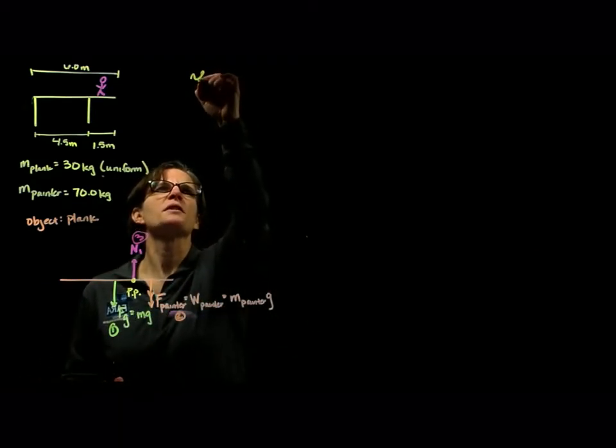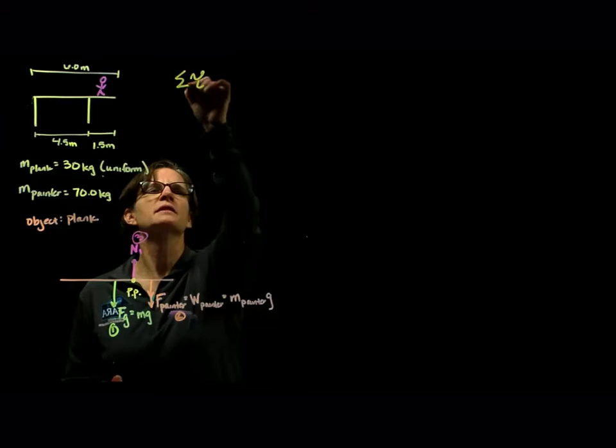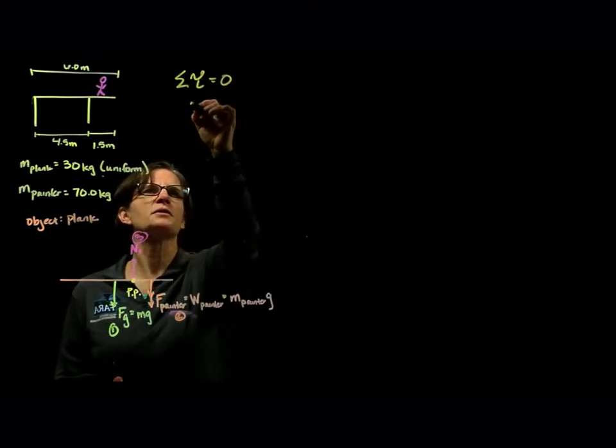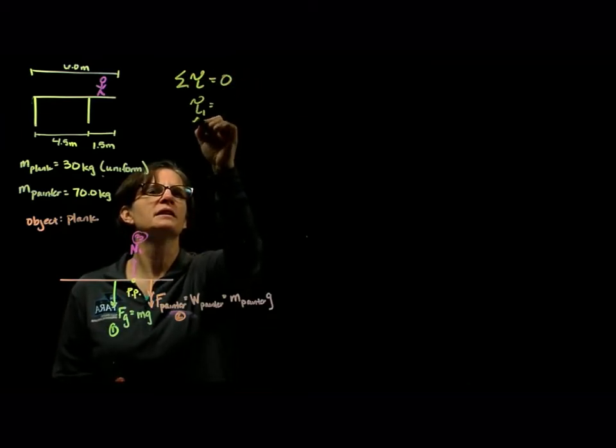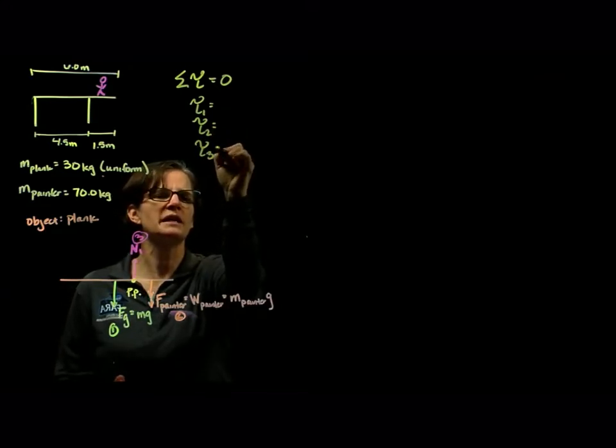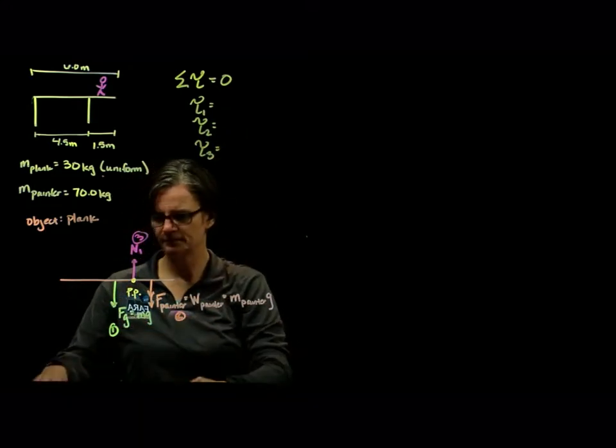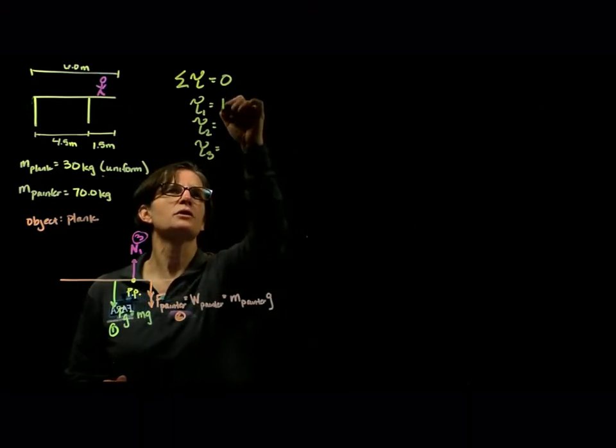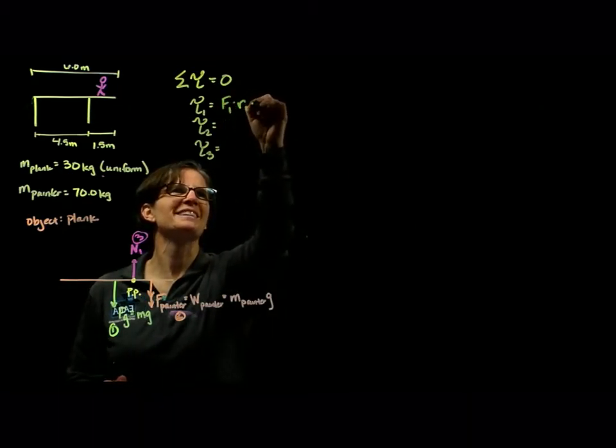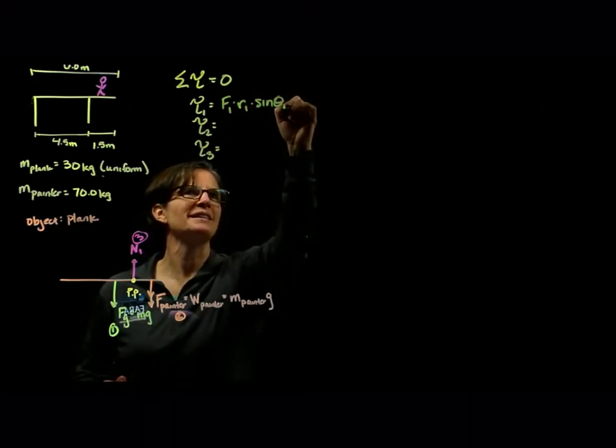So the sum of the torques we know we're going to equal zero. So we have torque one, torque two, and torque three. Torque one, force one times radius one times the sine of the angle one.